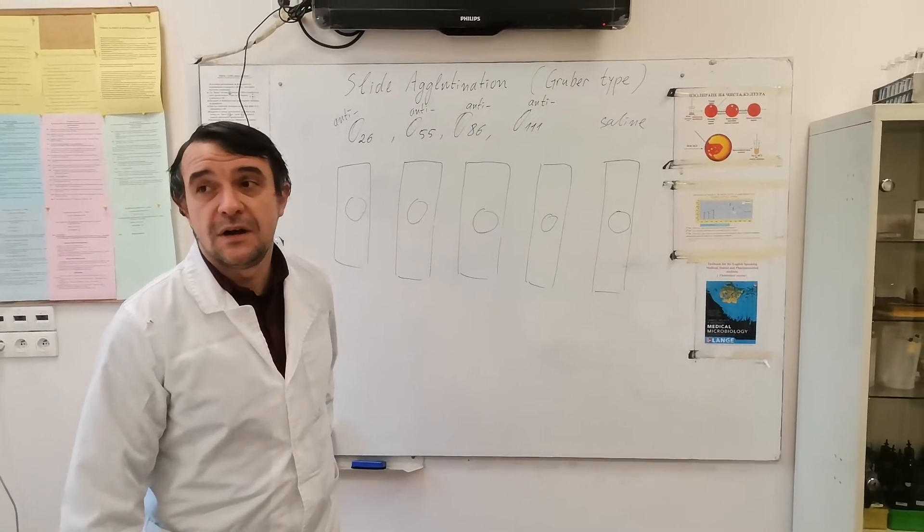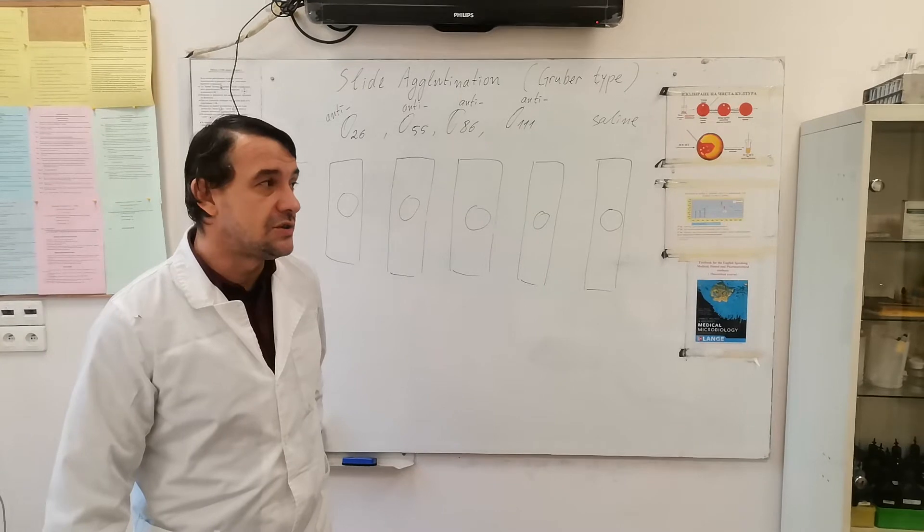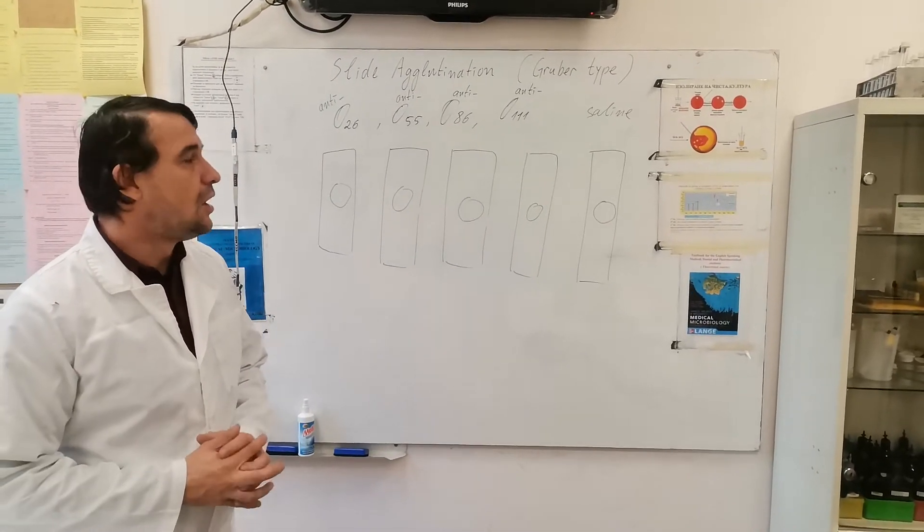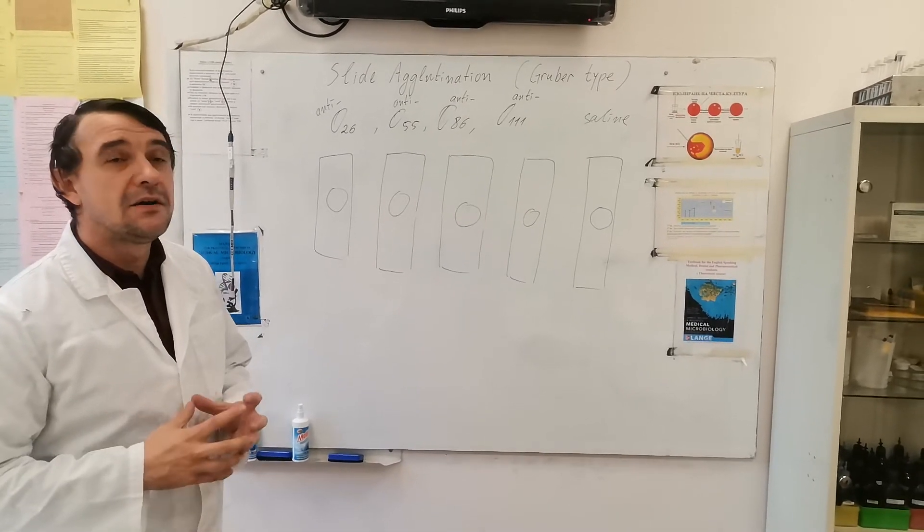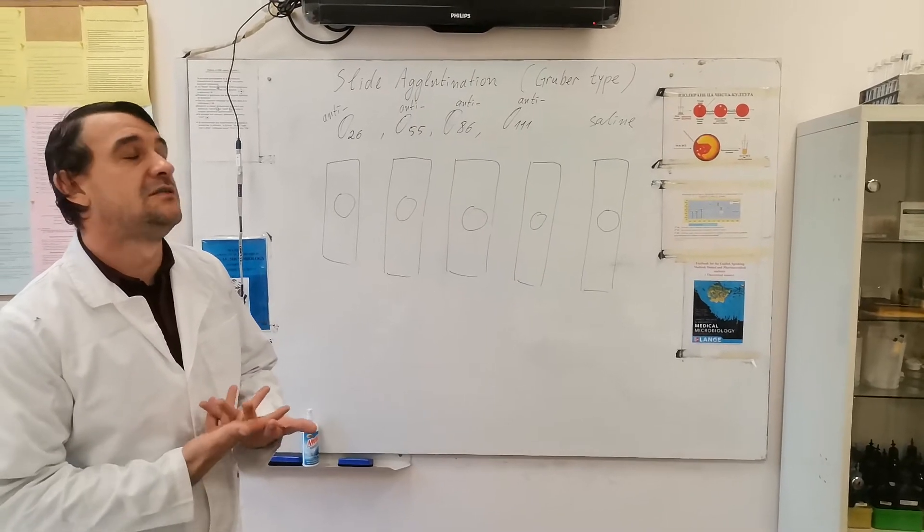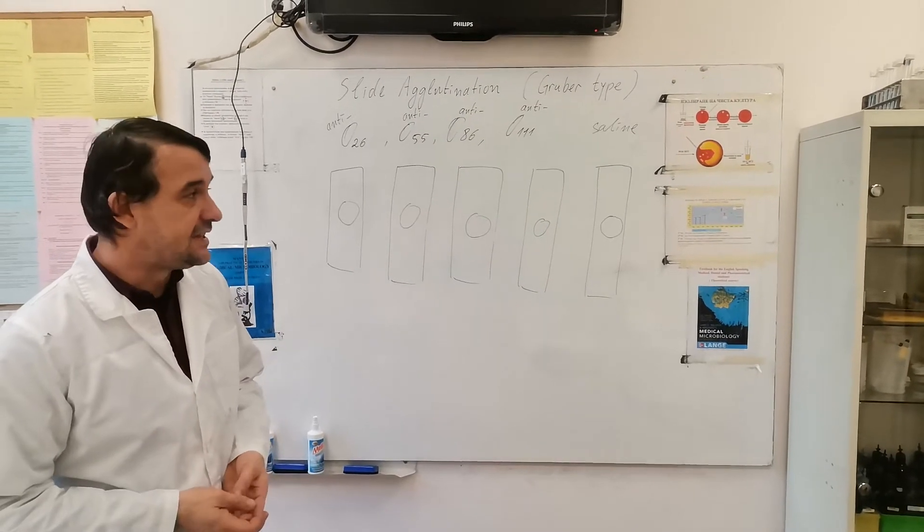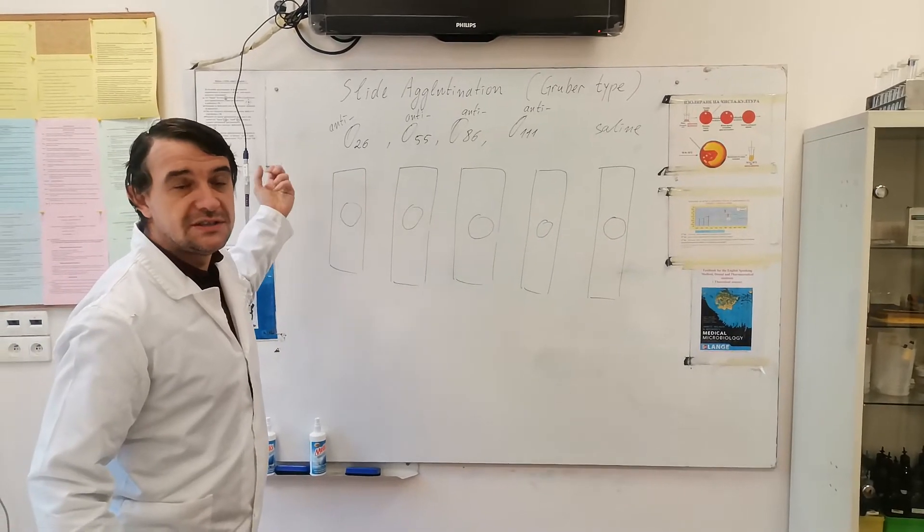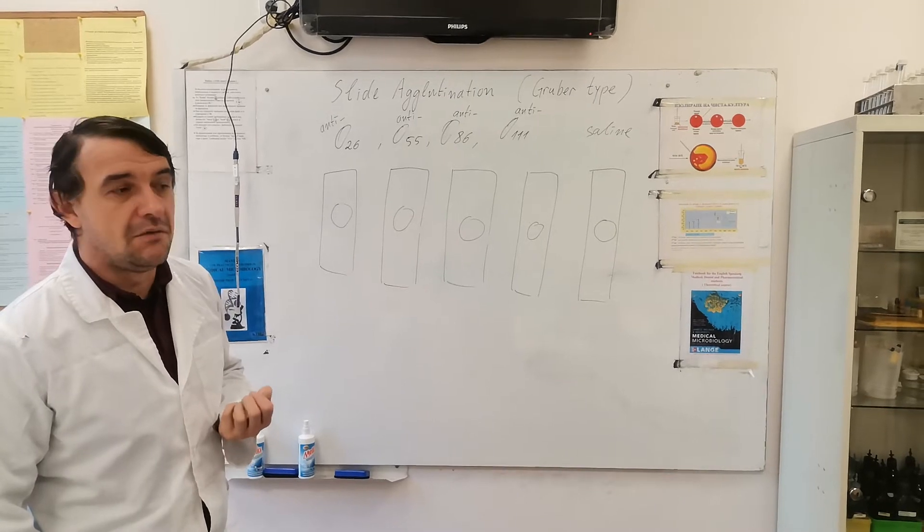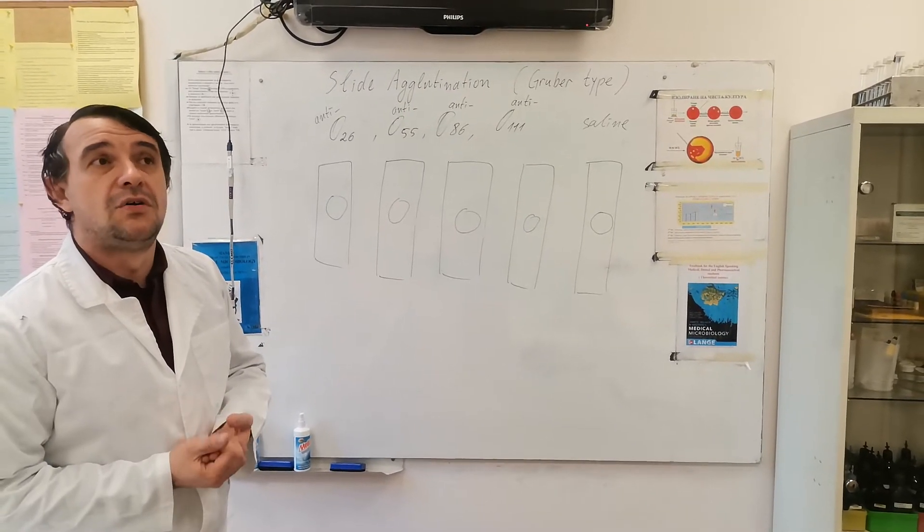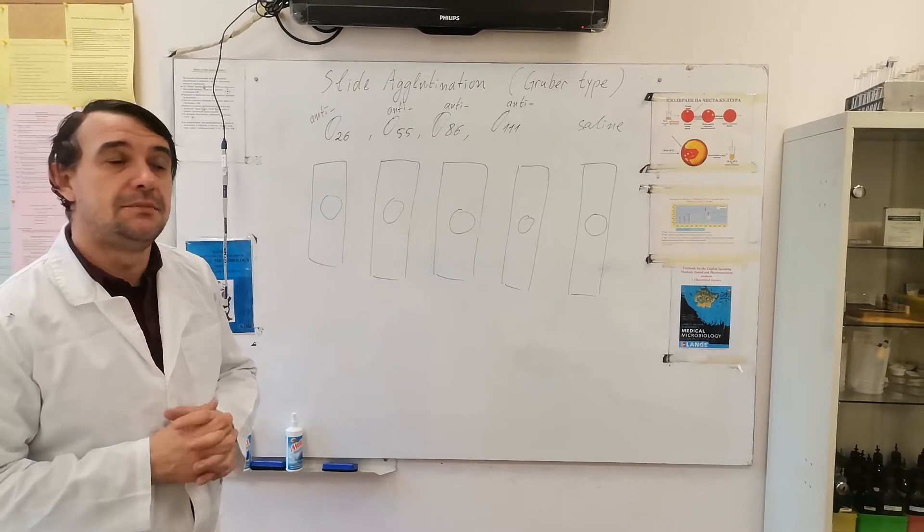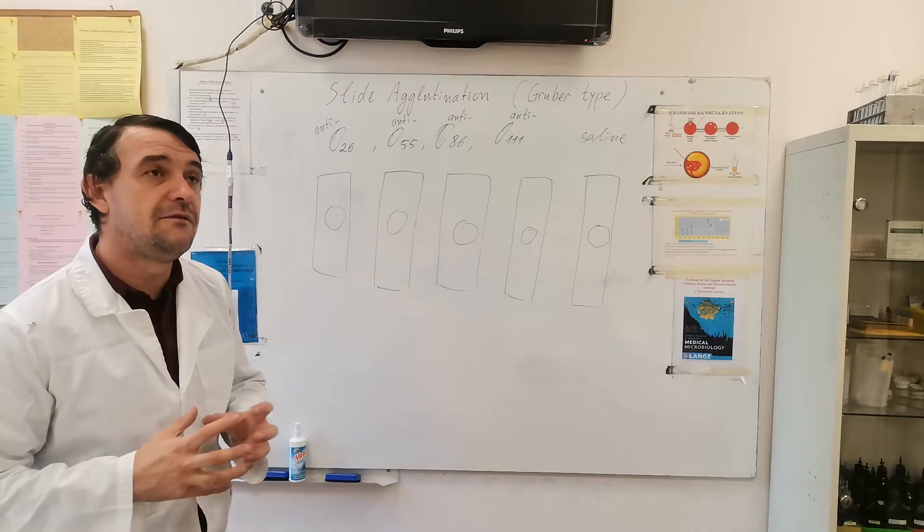Agglutination is a type of serological reaction, actually an antigen-antibody reaction, where the antigen called agglutinogen is a part of a larger structure. Usually it's an integral part of a bacterial cell or another type of cell, like the O-antigens that are lipopolysaccharides of gram-negative cell wall. Antibodies are called agglutinins, so there is compatibility between the antigen and antibody and they form complexes.